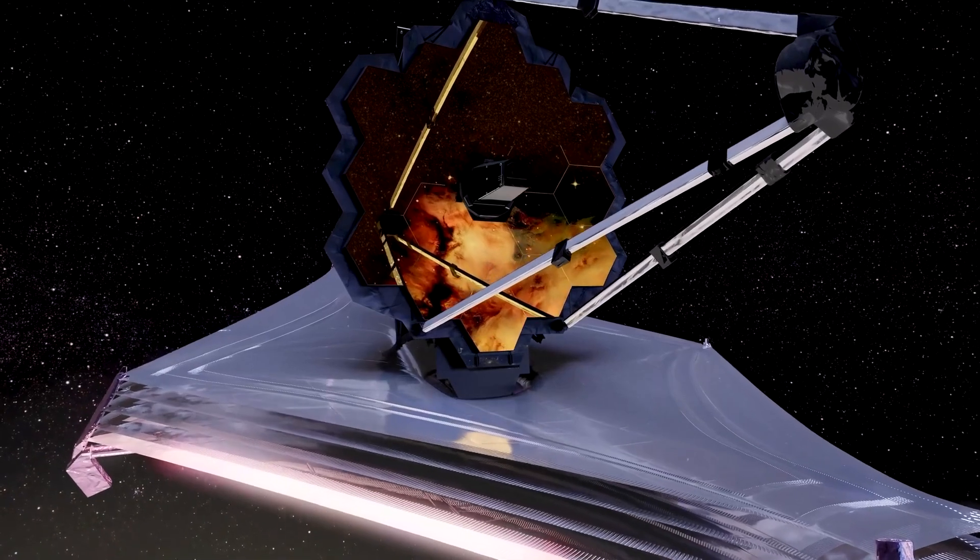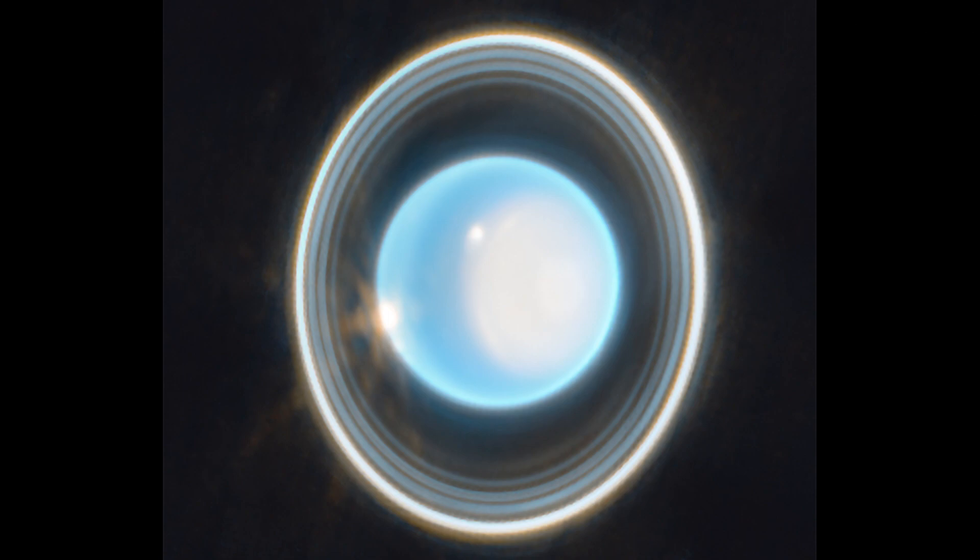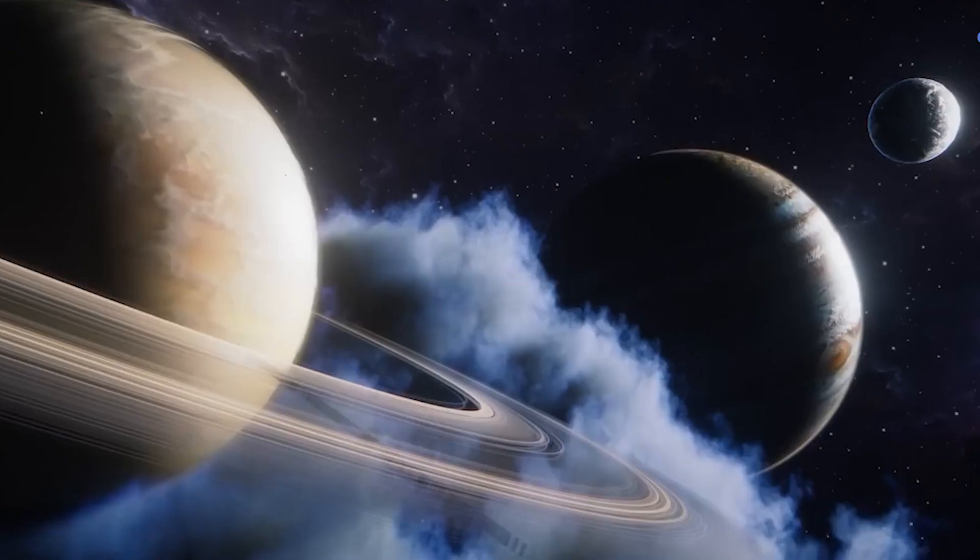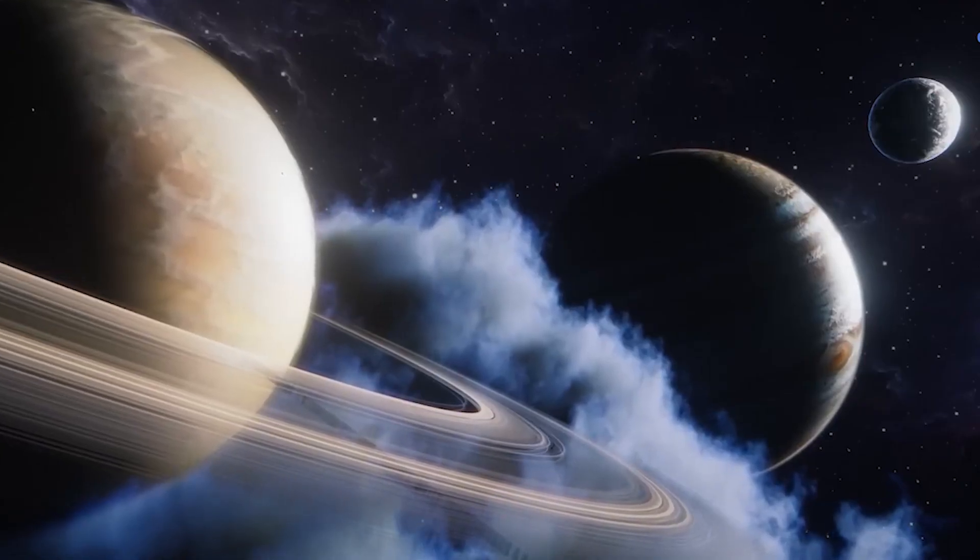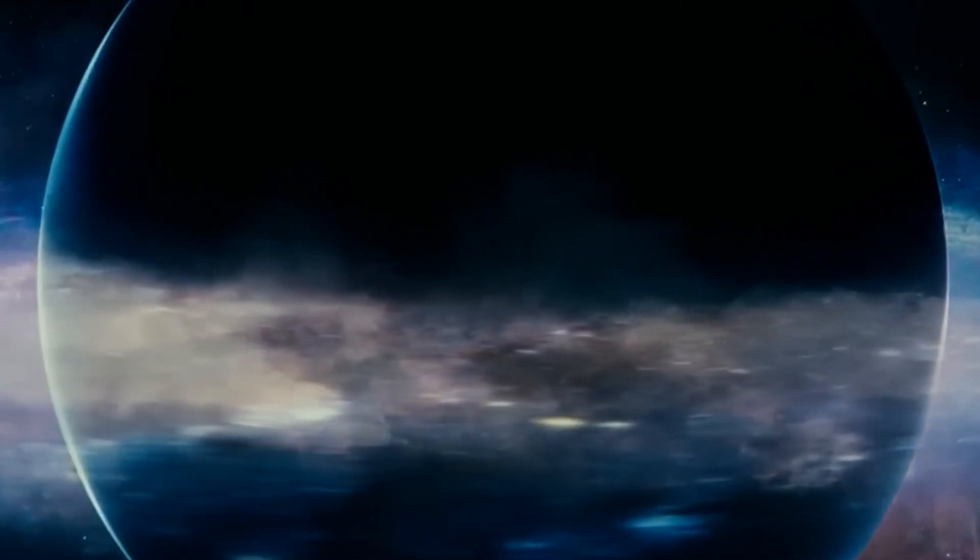The JWST has also captured incredible images of objects closer to home, including a stunning image of Uranus. This image depicts the ice giant's ring system, its brightest moons, and its dynamic atmosphere in great detail.